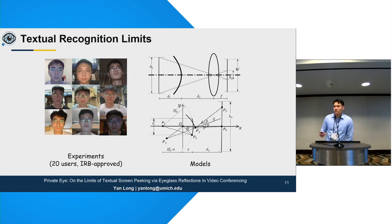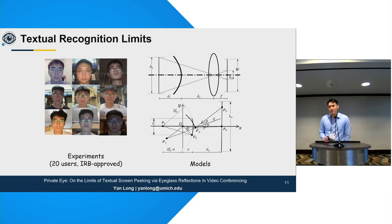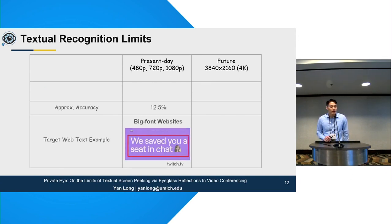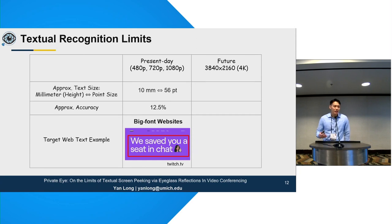The question we care about most is how serious this problem really is, and should I worry about it right now? To explore the textual recognition limits, we did experiments with 20 users and built mathematical models that quantified the information leakage process. With present-day existing webcams, it is feasible to peek at some text on big-font websites — including popular websites like Twitch.tv — corresponding to a point size of 56 points and a physical height of 10 millimeters on the screen.